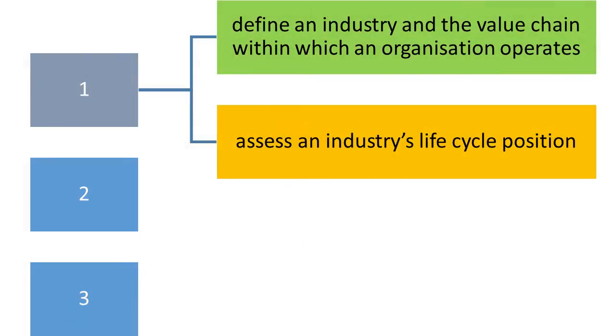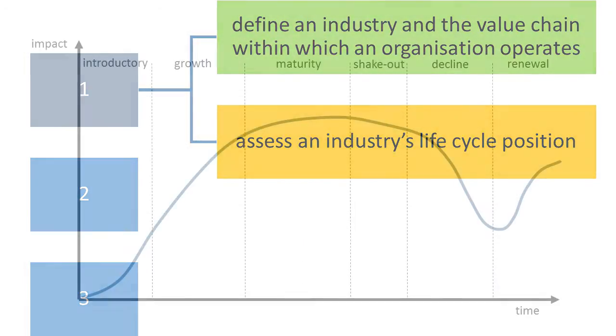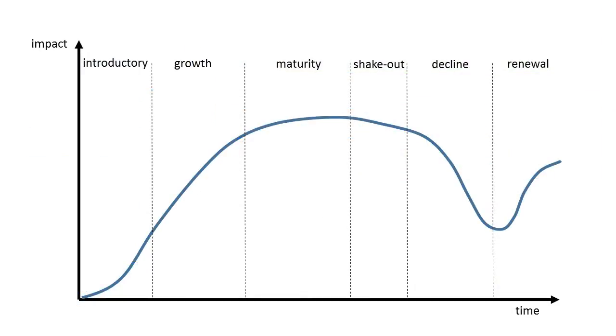We've defined the industry and specific segment and now identify the value chain in that industry. The last step is to look at the industry life cycle. In this summary, I'll cover a few key points to remember about this step.